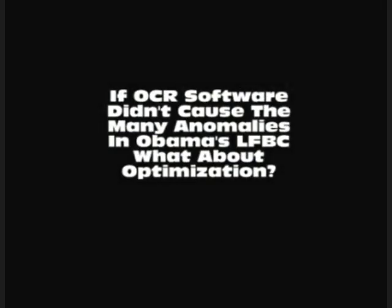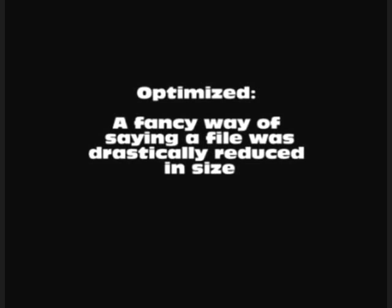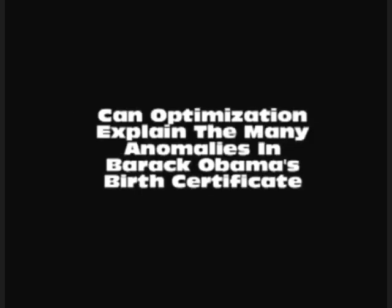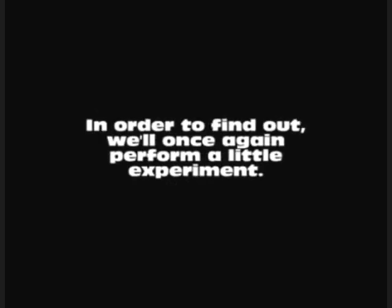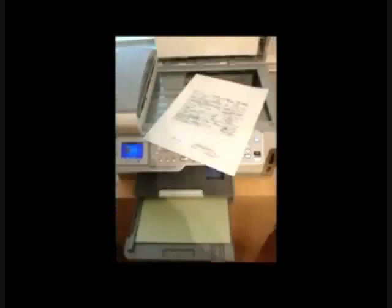If the use of optical character recognition software isn't responsible for the many anomalies in Barack Obama's long-form birth certificate, what about optimization — a fancy way of saying that a file has been drastically reduced in size? Was there a good reason for optimizing the birth certificate before posting it on the Internet? Given the anticipated number of downloads, yes, a smaller file would be beneficial. But can optimization explain the many anomalies? In order to find out, we performed an experiment: we took the birth certificate image, removed the green background, photocopied it onto green basket-weave safety paper, scanned it into a computer, and this time also optimized the document.